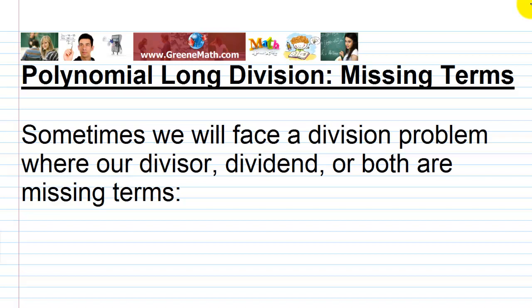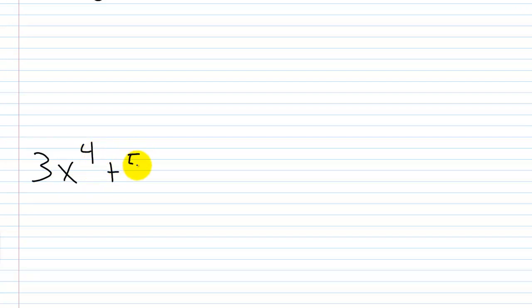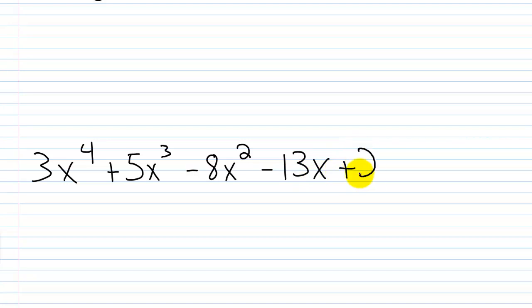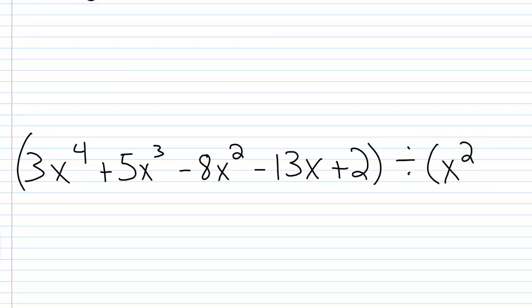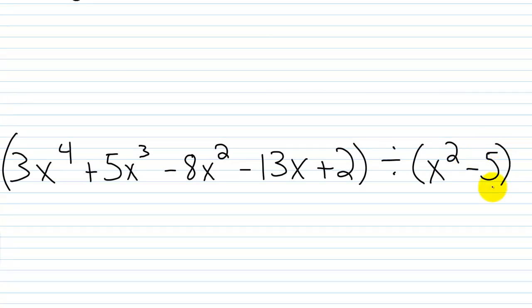So let's say we have 3x to the fourth power plus 5x cubed minus 8x squared minus 13x plus 2, and we want to divide this by x squared minus 5. The dividend is in standard form and we're not missing any terms — we've got x to the fourth, x cubed, x squared, x, and then 2. But if I look at my divisor, I have x squared and then negative 5, so I'm missing my x to the first power term.